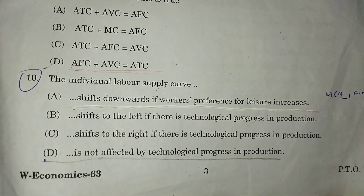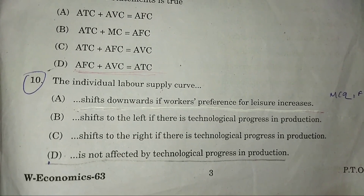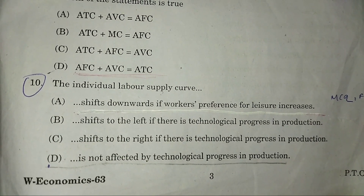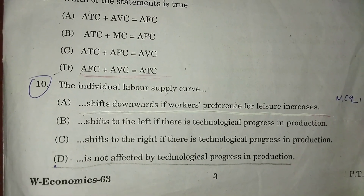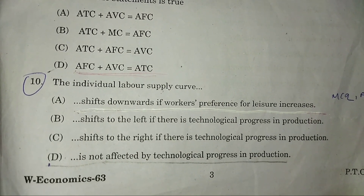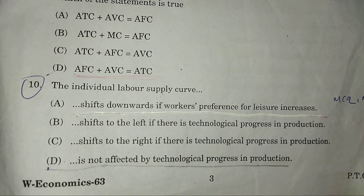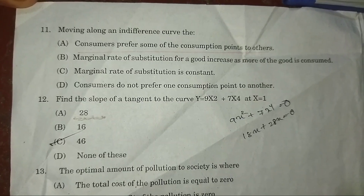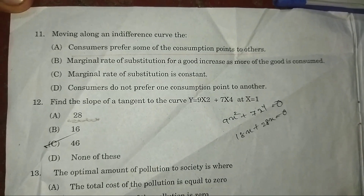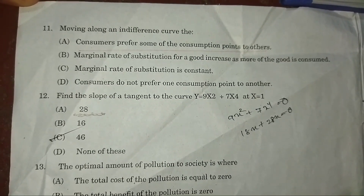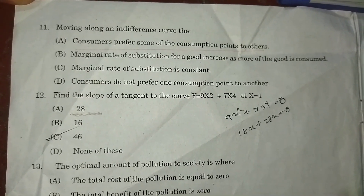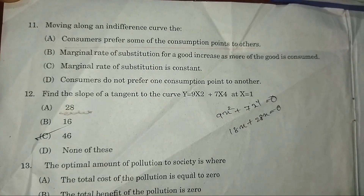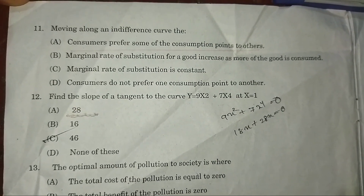Question 10: The individual labor supply curve — answer: D — is not affected by technological progress in production. Question 11: Moving along an indifference curve — answer: A — a consumer prefers some consumption points to others.